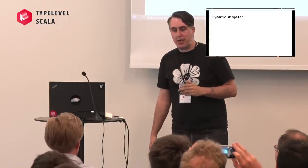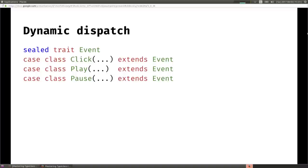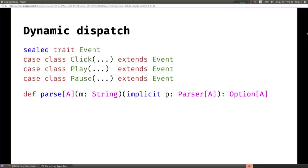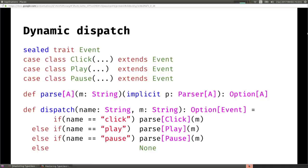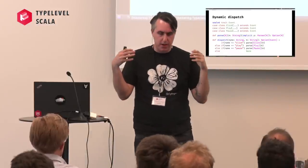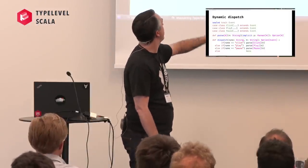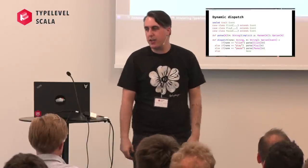When I joined SoundCloud, I came into this codebase that had a gnarly dynamic dispatching setup - a sealed trait hierarchy of events like click, play, pause, and many more. There was some weird parsing with basically a switch statement saying: if you've got a click, parse it as a click; if you've got a play, parse it as a play; if you've got a pause, parse it as a pause. Working with this was really cumbersome - every time I added a new event, I had to put it into the hierarchy and update all this matching code. I felt like this was gross.